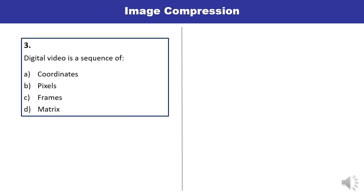Question 3: Digital video is a sequence of — coordinates, pixels, frames, or matrix? Digital video is actually a sequence of frames. So let us mark C as the correct answer.